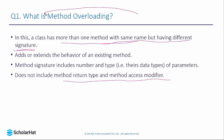Method overloading only checks the number and type of parameters and the name of the method. It does not include the return type — whether they are returning void, an integer, or a string — and it does not check the access modifier, whether they have public, private, or internal access.